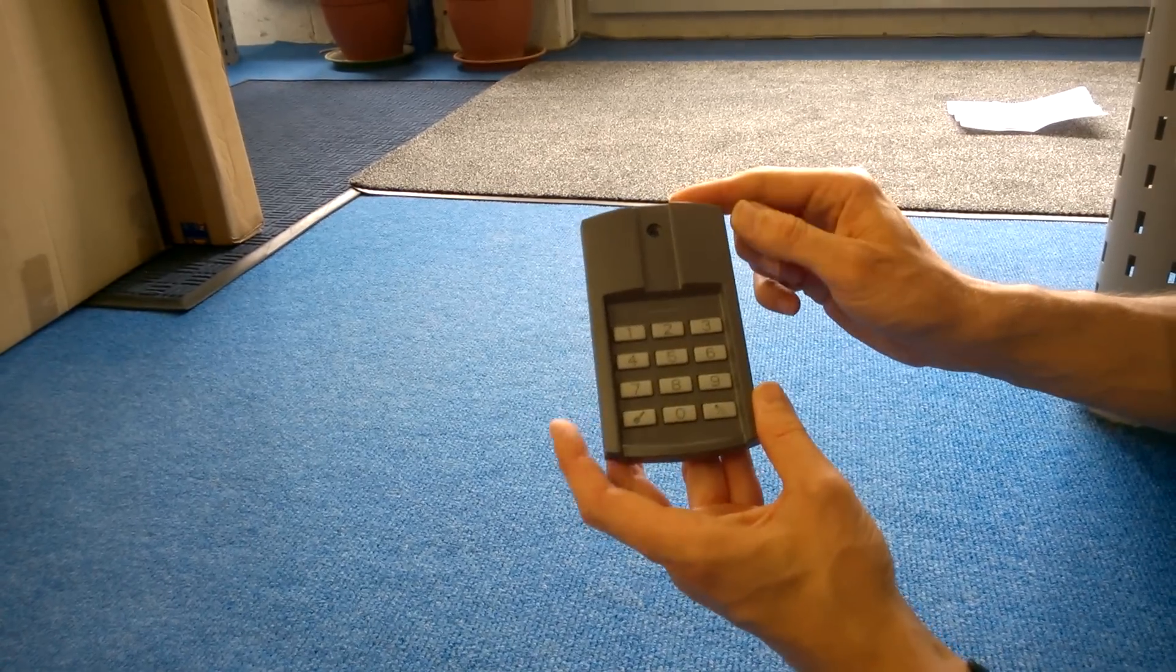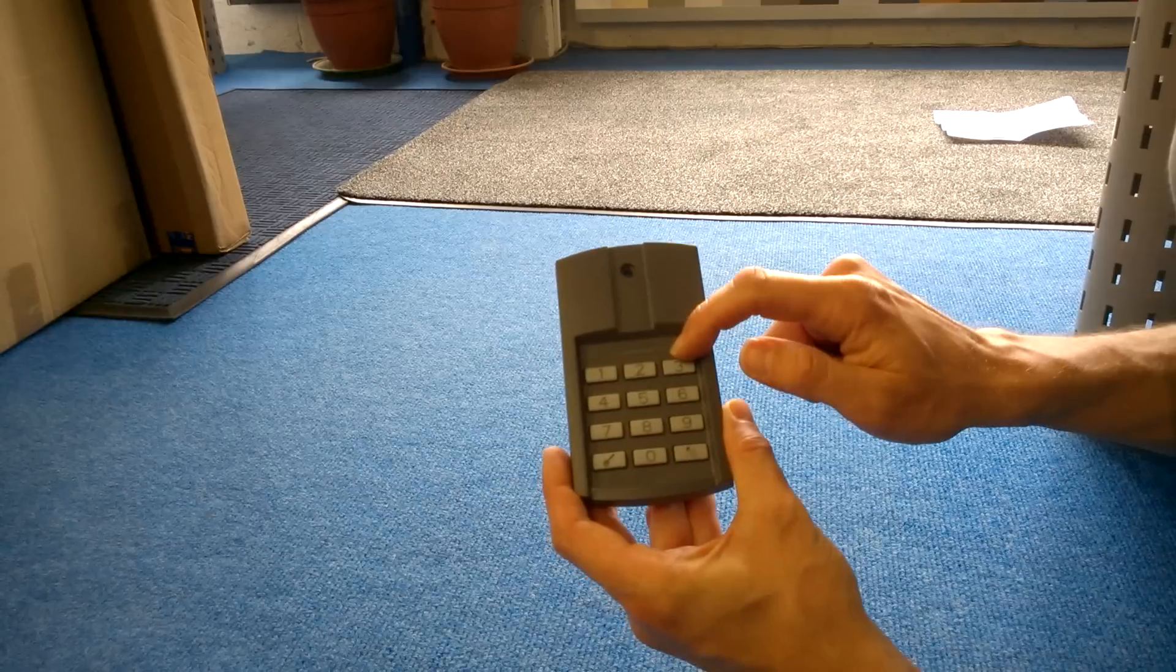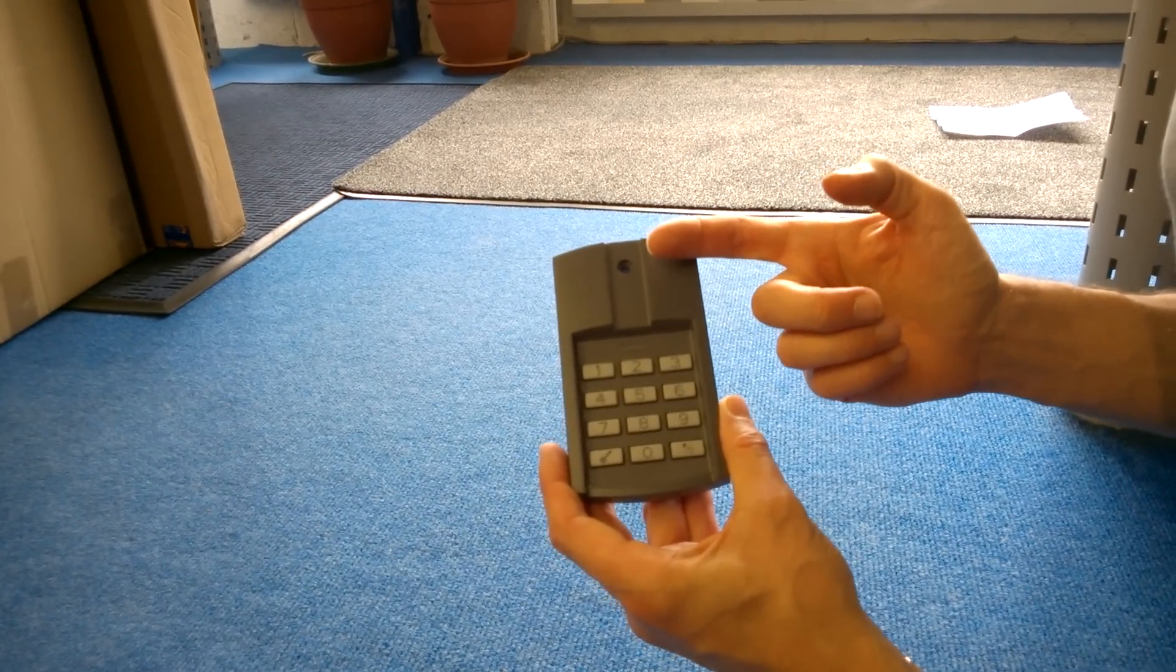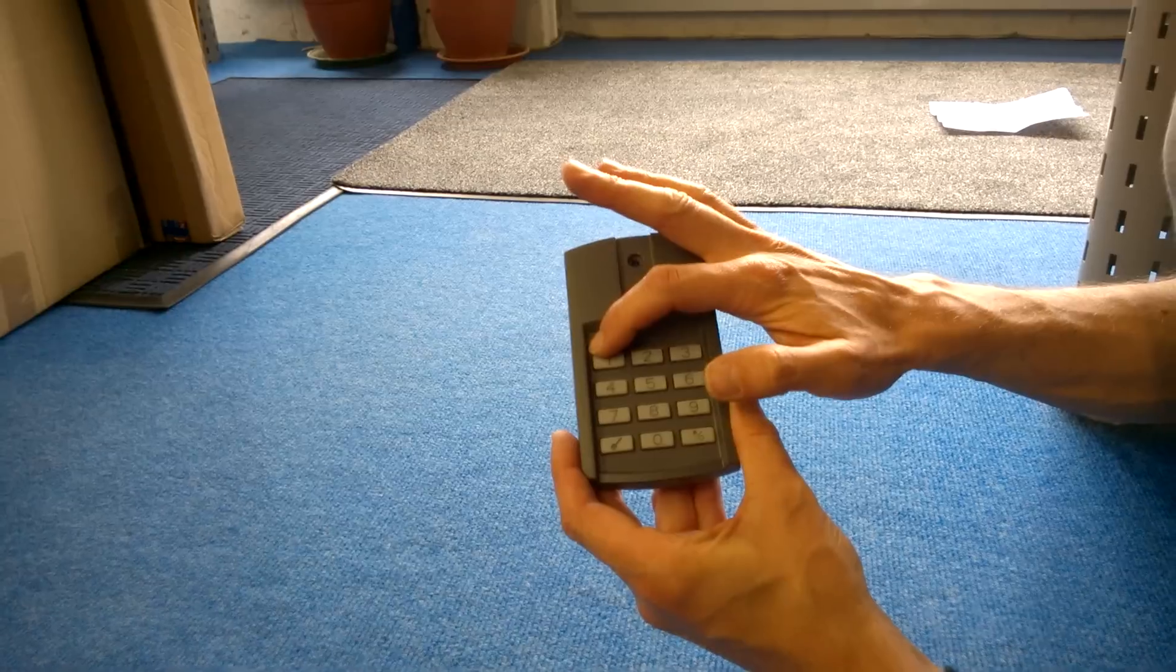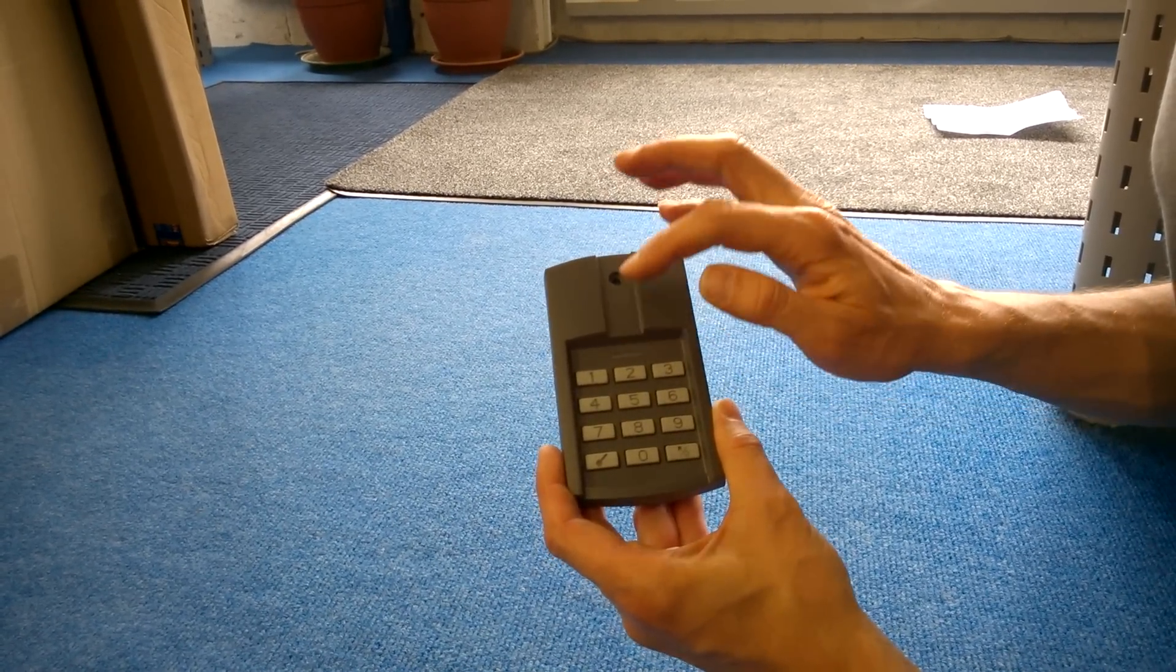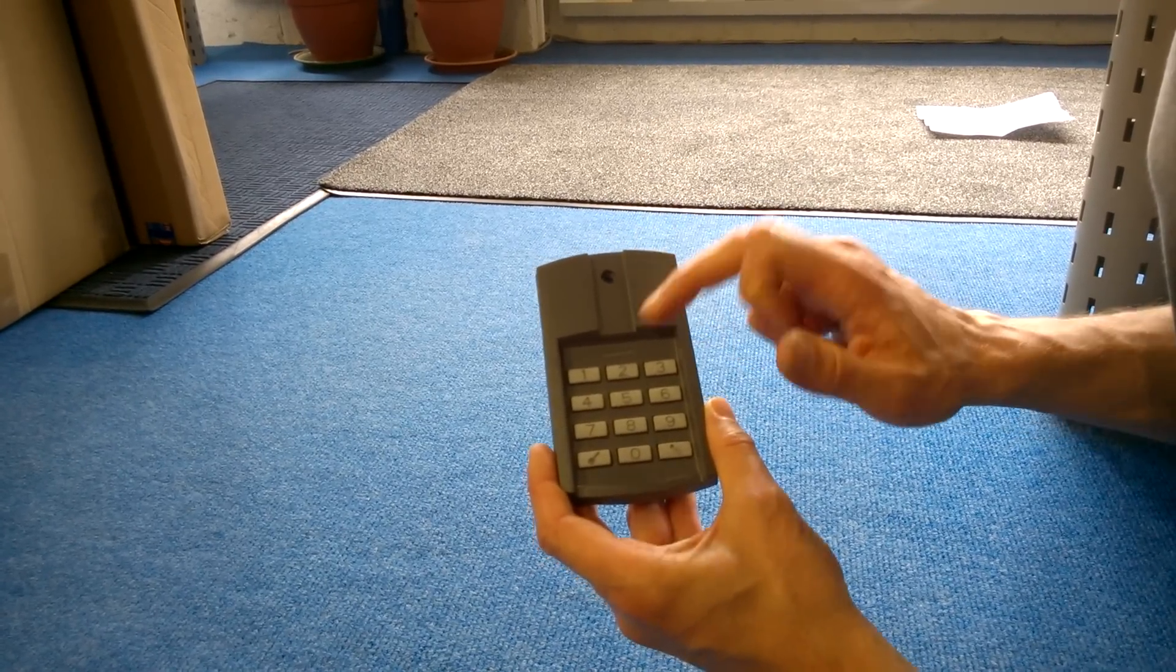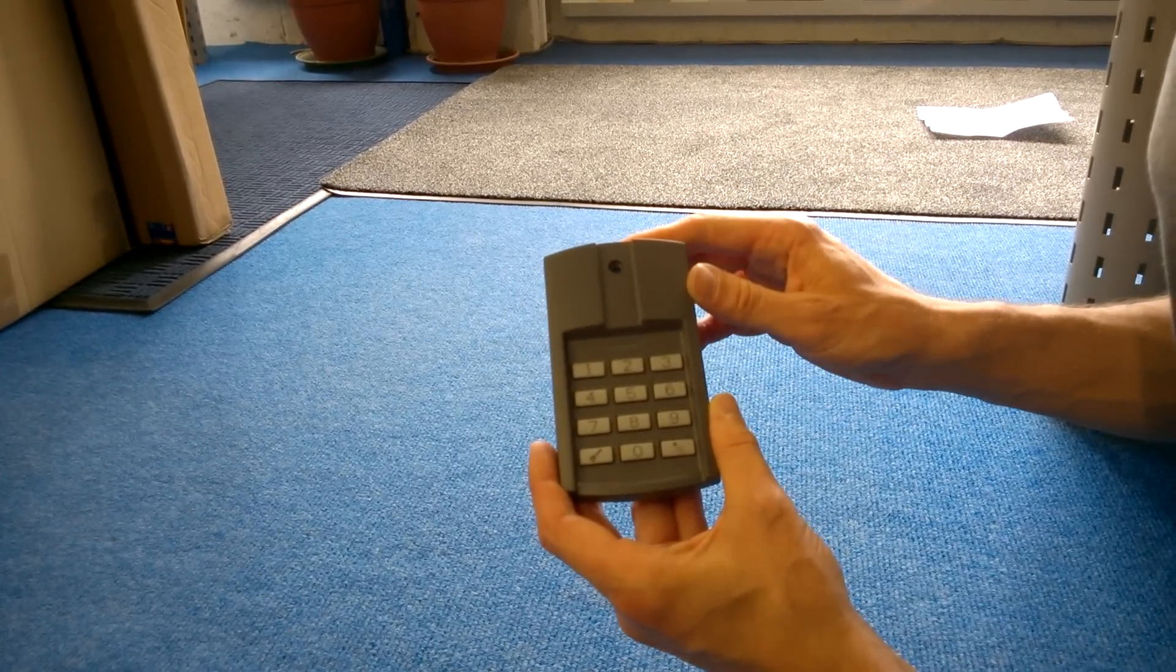So the first thing to do is set up your code. Now there are three memory spaces in this: one, two, and three, so you can use it to operate three different devices. That could be two garage doors and a set of gates, or a garage door, an outside lighting system, and a set of gates. But for this we only need one memory space—it's just going to operate a door.